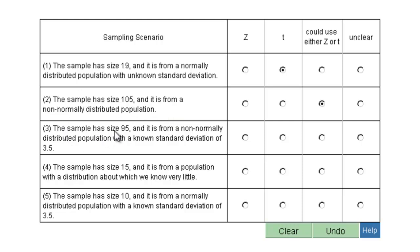The sample has a size of 95, from a non-normally distributed population with a known standard deviation. Because the standard deviation is known — and even though it's non-normal, when you have a sample size over 30, the distribution of sample means is approximately normally distributed. So it doesn't matter that this is non-normal; the distribution of sample means will still be normal. We can use Z here.